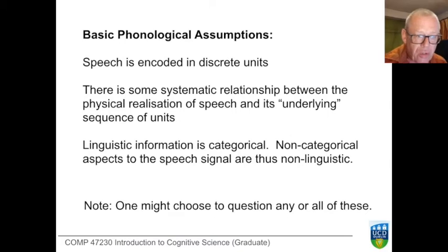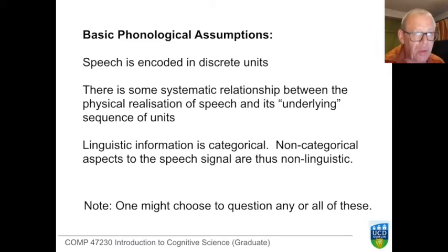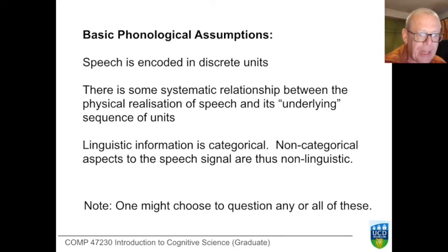Phonology usually uses a fixed set of assumptions: that speech is encoded in discrete units — those are the phonemes — and that there is a systematic relationship between the physical realization of speech as sound and its underlying sequence of units. Within this generative view of language, elements of a language are contrastive — that is, you know it's a 'p' because it's not a 'b' or a 't' or a 'd'; it occupies a place within a structure. Linguistic information is then assumed to be categorical.